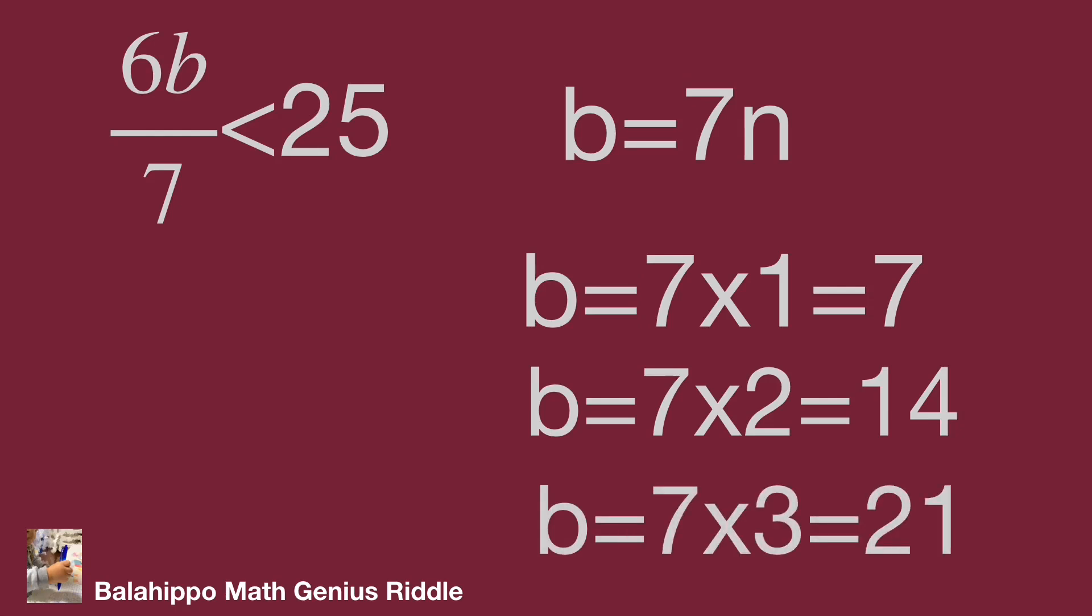For b equals 7, we get 6b over 7 equals 6. For b equals 14, 6b over 7 equals 12. And for b equals 21, 6b over 7 equals 18. Now we have these three conditions. It becomes easy. Let's check each condition to find a and b.